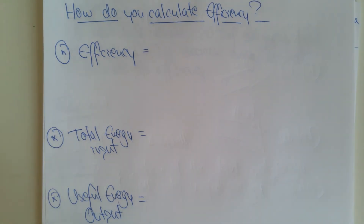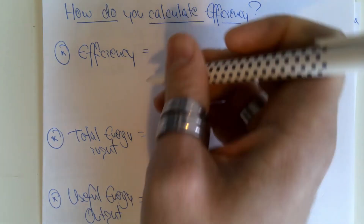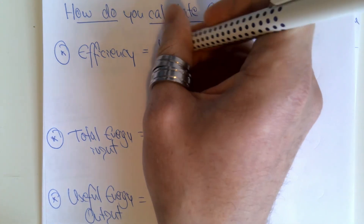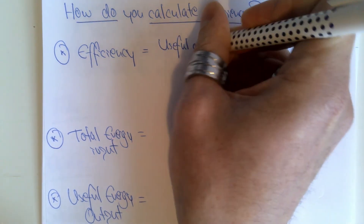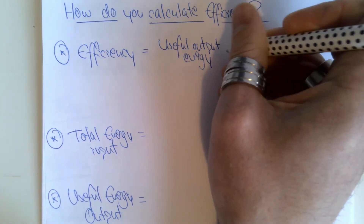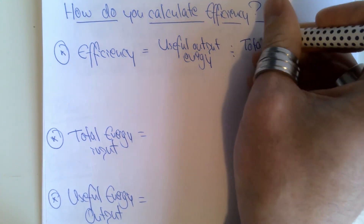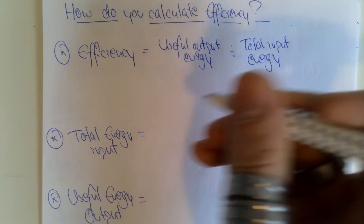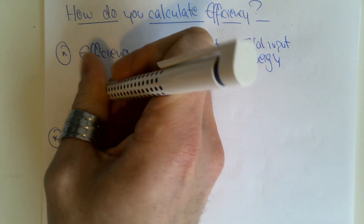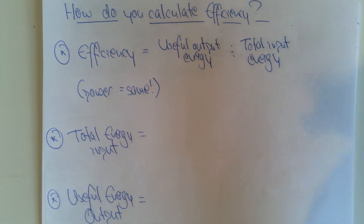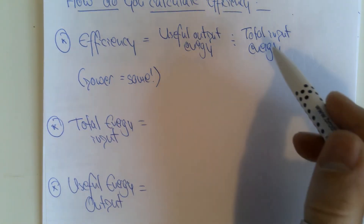When calculating efficiency, as with key concepts in physics, there is a key equation to learn. We also need to be aware of how to rearrange it to calculate different parts. Efficiency is calculated by taking the useful output energy (in joules) and dividing it by the total input energy. This can also be written in terms of power: useful output power divided by total input power.